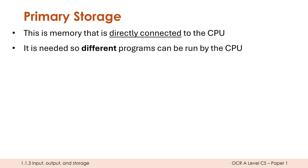Now we need to have some storage, some memory, so we can run different programs. If we had no memory, our CPU would have to be hard-coded to run a particular program. Having memory means we can load in multiple programs and the CPU can take turns executing these different programs. The first-ever computers could only ever execute one program. It was only when they added memory that you could suddenly start to switch between different programs.